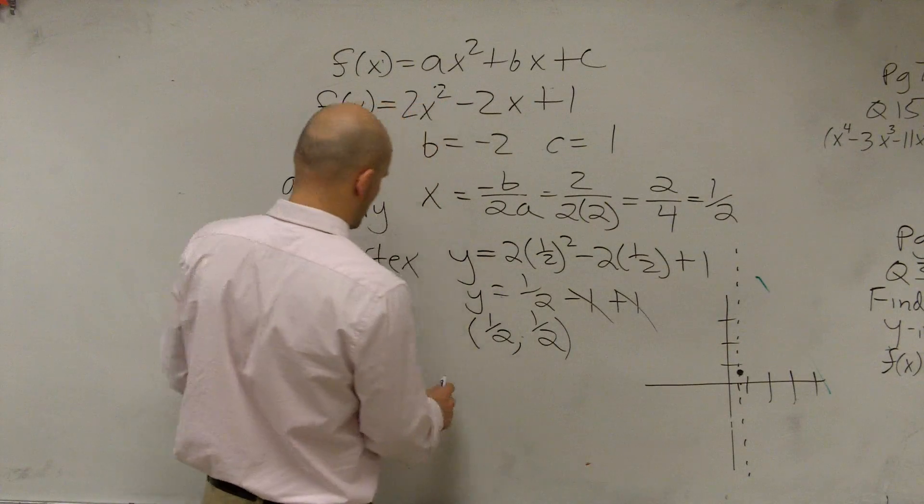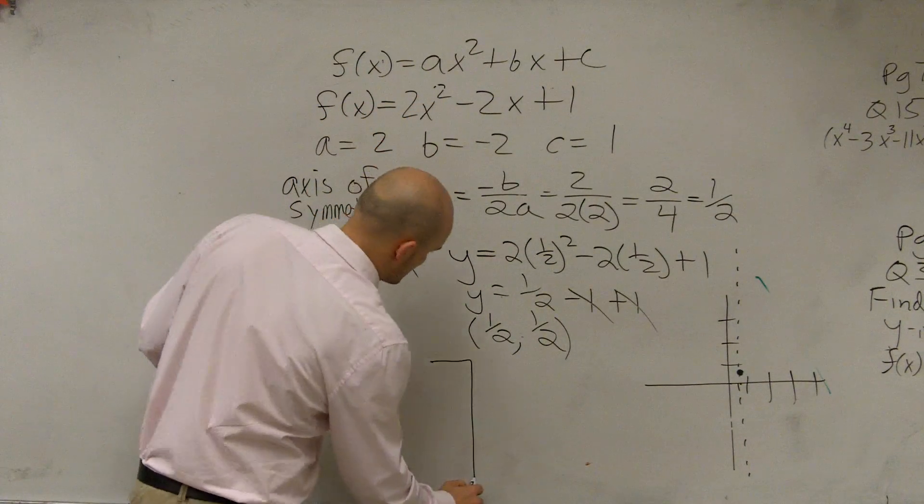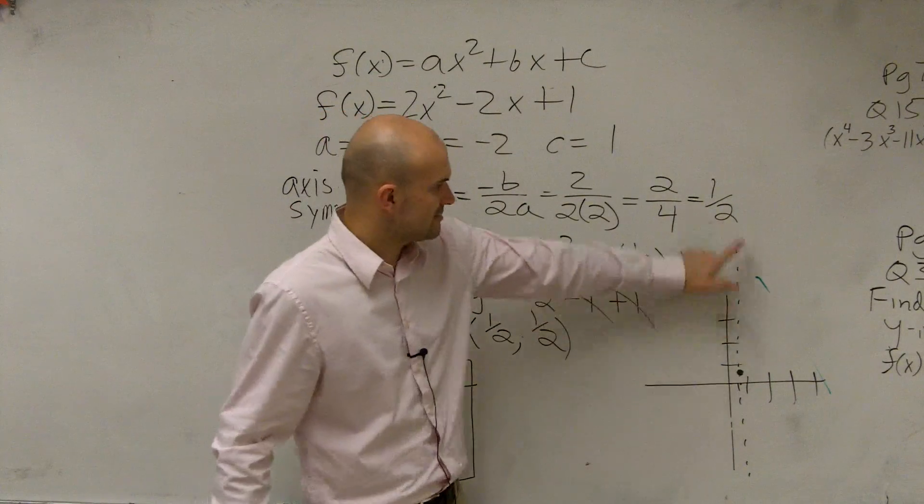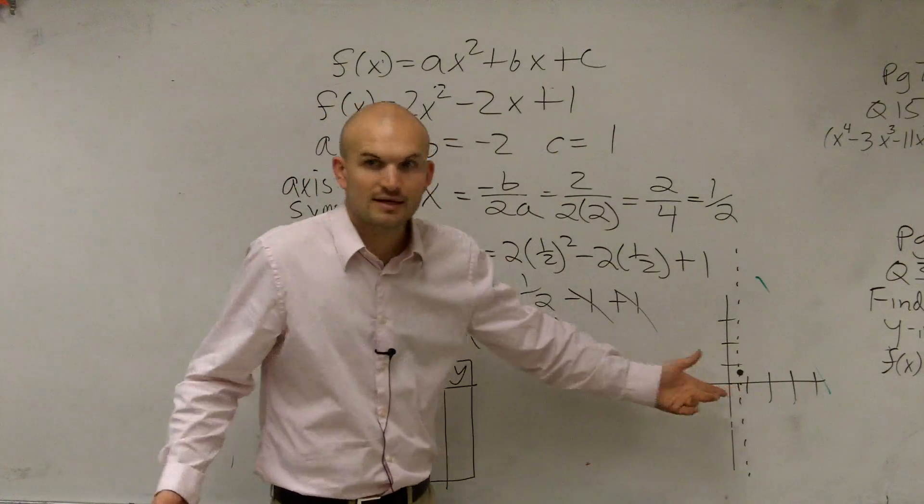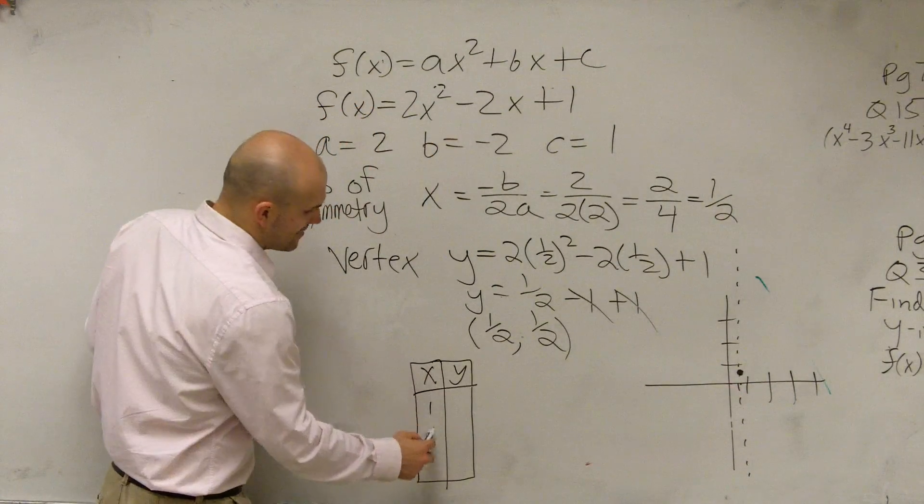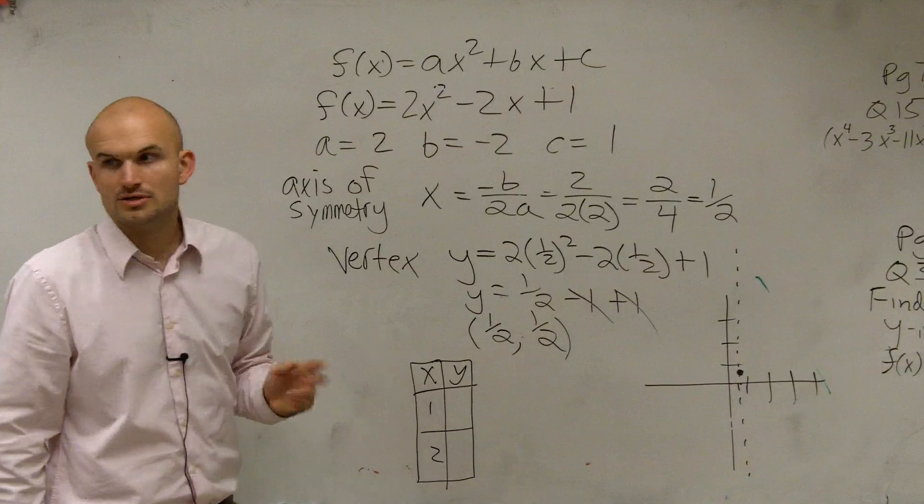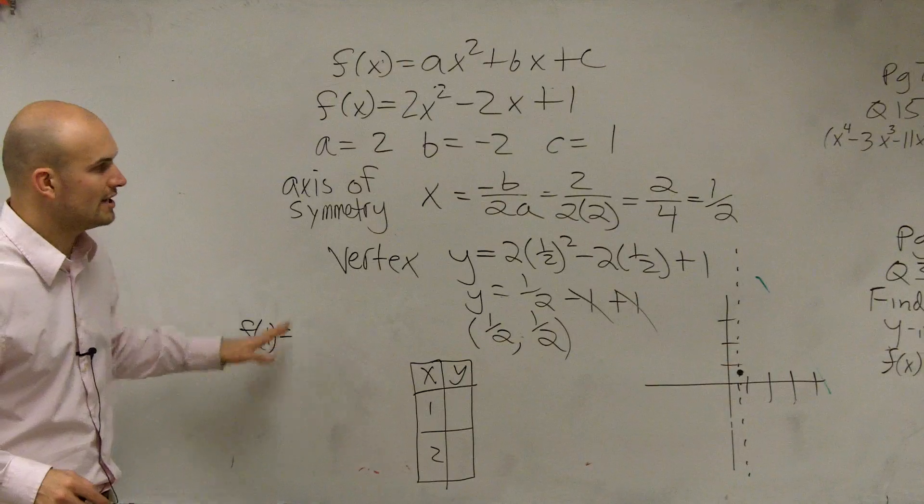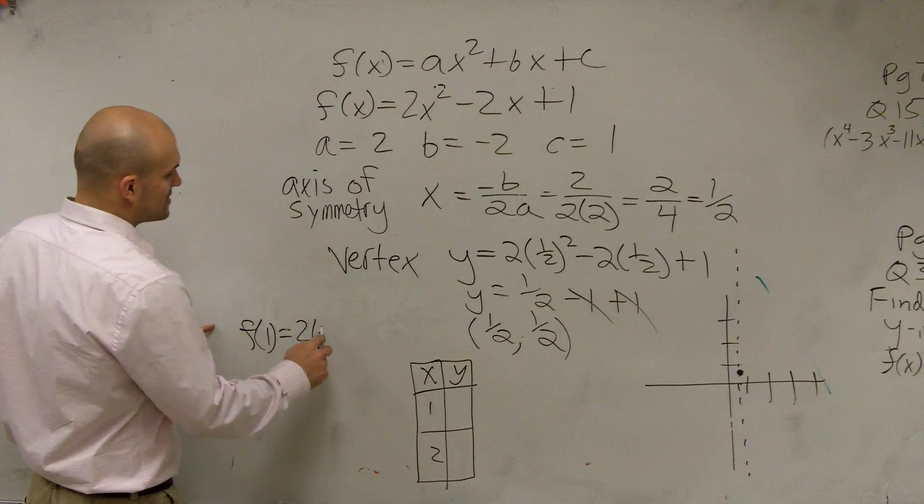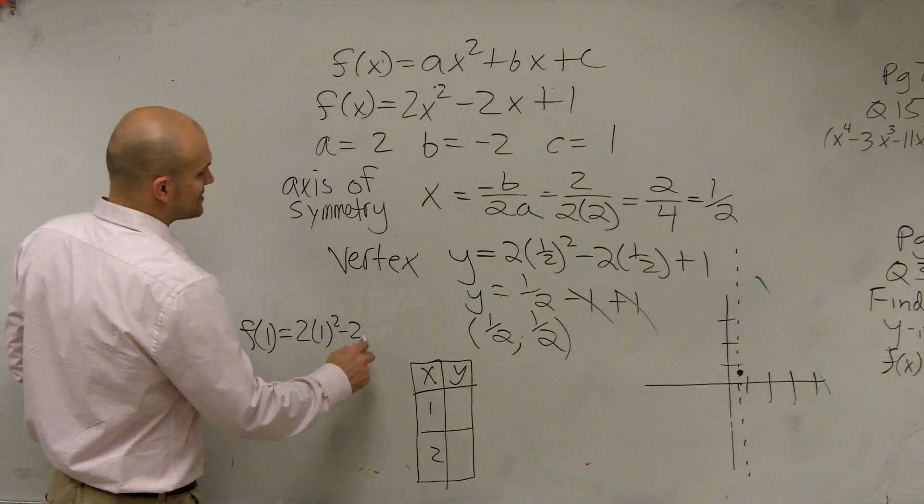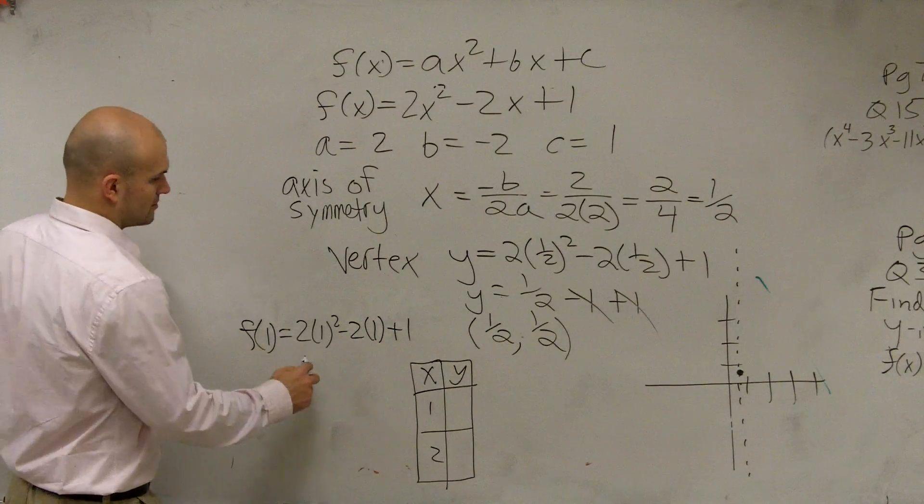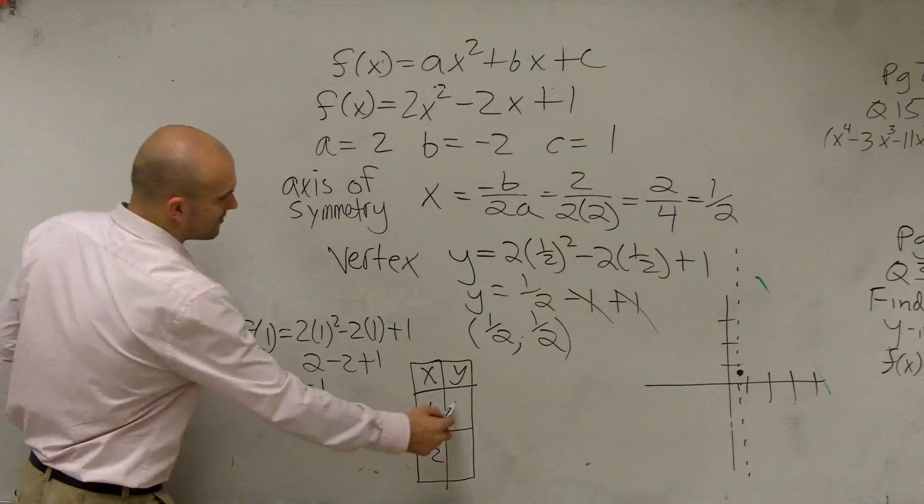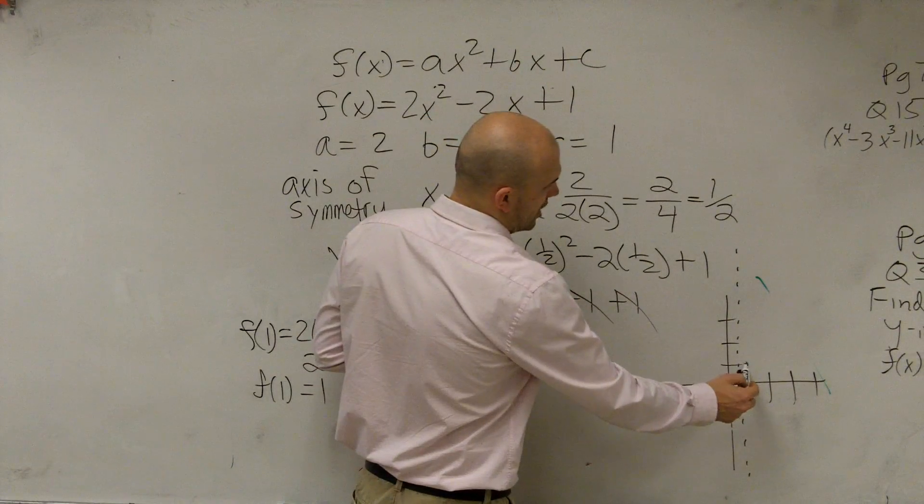So let's do, let's create a table now. An x-y table. We already found the axis of symmetry, and then we plugged that in to find the vertex. Now let's pick our two points, and Thomas wants to do 1 and 2. So let's evaluate for f of 1. So what you're going to do is you're going to plug 1 into your function. So you say 2 times 1 squared minus 2 times 1 plus 1. So we say f of 1 equals 1. So you go over 1, up 1.